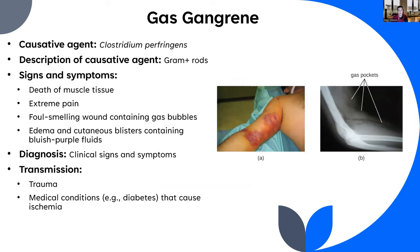Gas gangrene is caused by Clostridium perfringens, a gram-positive rod and anaerobe that forms endospores in aerobic environments. It typically enters the body through trauma or medical conditions causing ischemia. Signs and symptoms include extreme pain from death of muscle tissue, a foul-smelling wound containing gas bubbles from anaerobic metabolism, edema, and cutaneous blisters containing purplish-blue fluid.